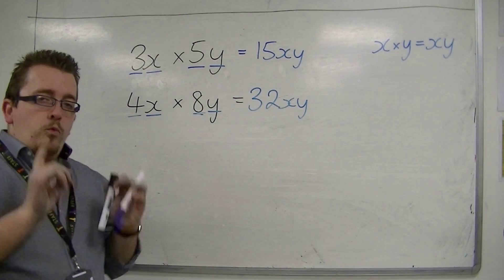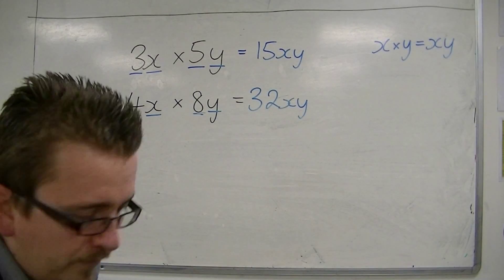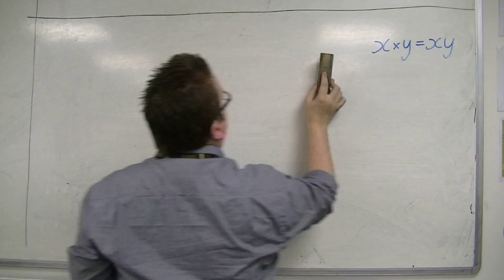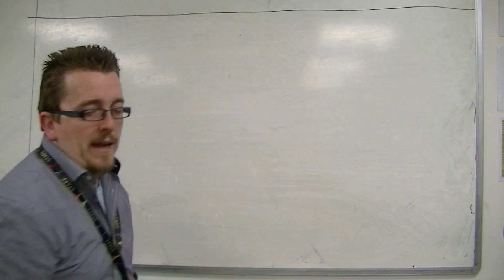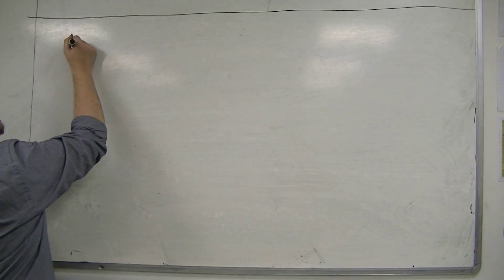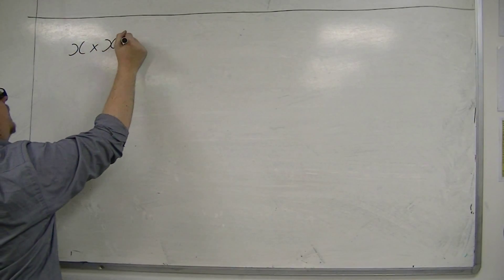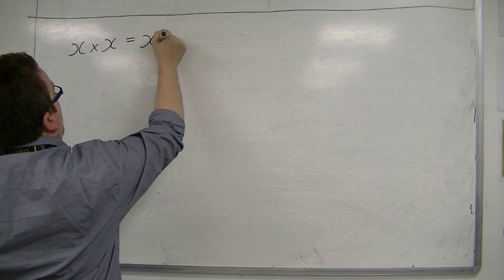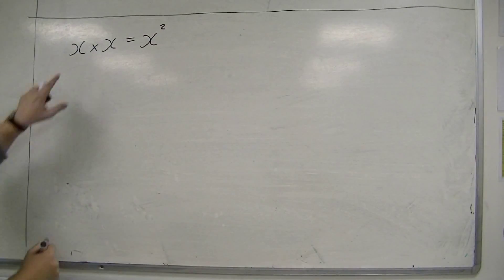Now, what we need to take into account from this point on is understanding and going back to powers. So if you have something like x times x, then this can be abbreviated to x squared. So x times x, x times itself is x squared.